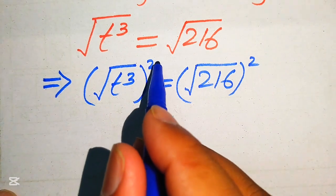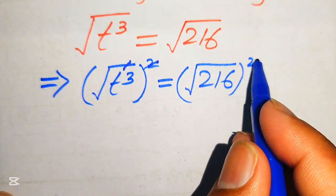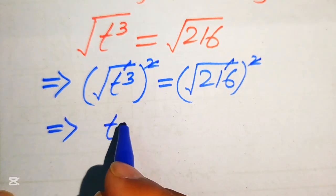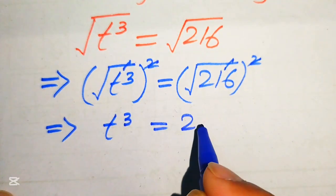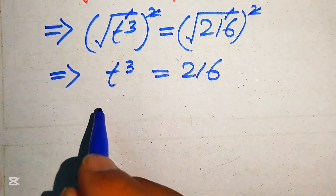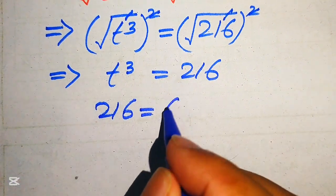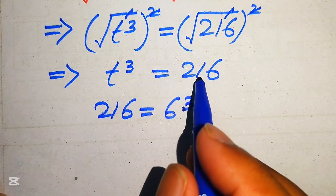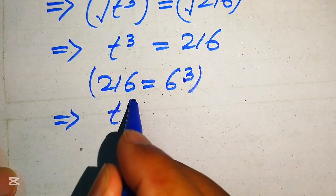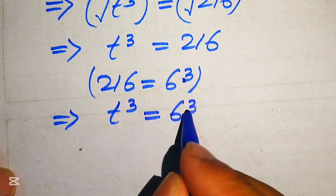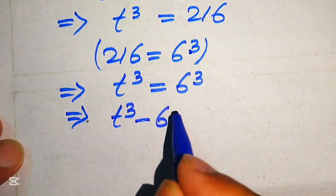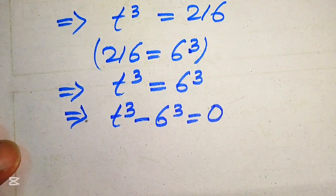In the next step, we cancel this term: the 2 from squaring cancels with the square root, and we get t cubed equals 216. We know that 216 equals 6 cubed, so we replace 216 with 6 cubed. Our expression becomes t cubed equals 6 cubed, and moving 6 cubed to the left we get t cubed minus 6 cubed equals 0.